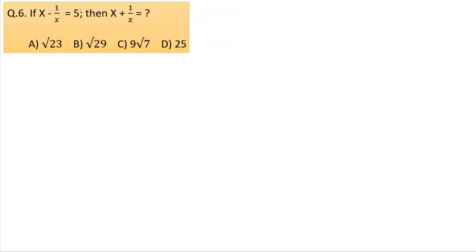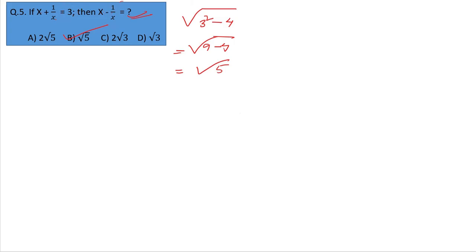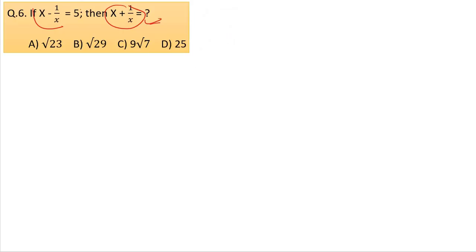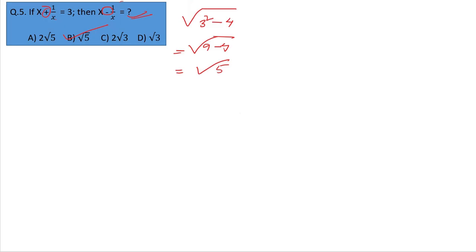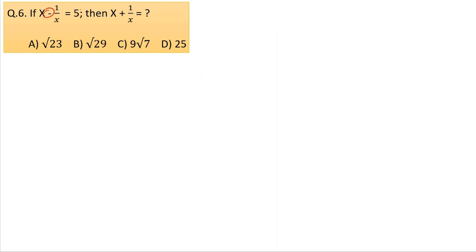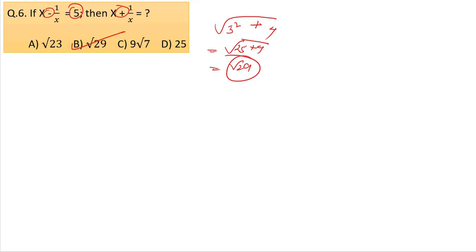Question number 6: x plus 1 by x equals 5. There are four parts to the equation — the second one involves minus numbers. We work: 5 squared plus 4, equals 25 plus 4, equals 29. Option number C.